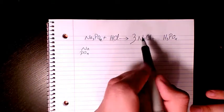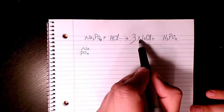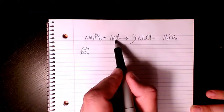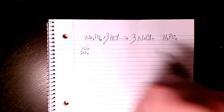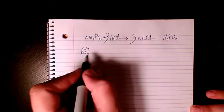What about chlorine? Chlorine here, we have three of them, three times one, and here we have just one, so I need to put three in here as well. So chlorine is balanced now.